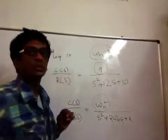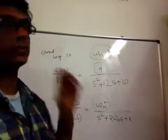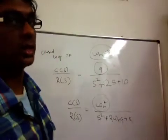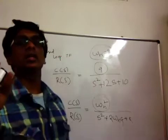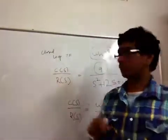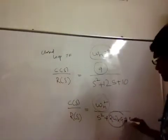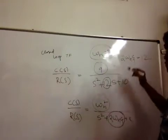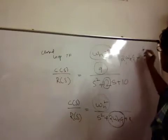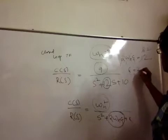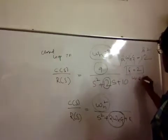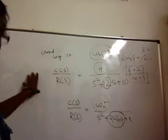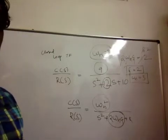So ωn = 3. From this you can obtain the value of zeta (ζ), the damping ratio — zeta is a Greek alphabet. Note that ωn is the undamped natural frequency. So 2ζωn = 12, which gives 2ζ × 3 = 12, so ζ = 2. And ωn = 3.